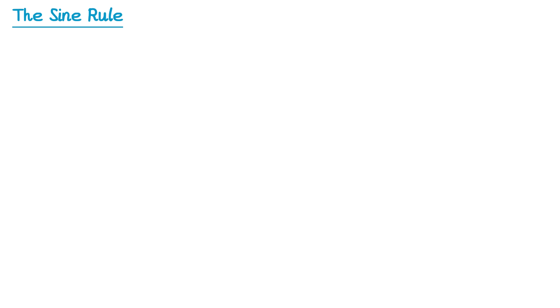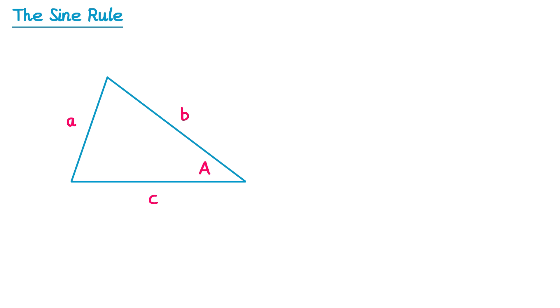In this video we're going to learn about the sine rule. Let's start by taking a triangle and labelling its sides a, b and c. We're going to label the angles inside this triangle with the same letter as the side opposite it, but using capital letters so that we know angles are capitals and sides are lowercase. Opposite side a we put angle A, opposite side b we have angle B, and opposite side c we have capital C.